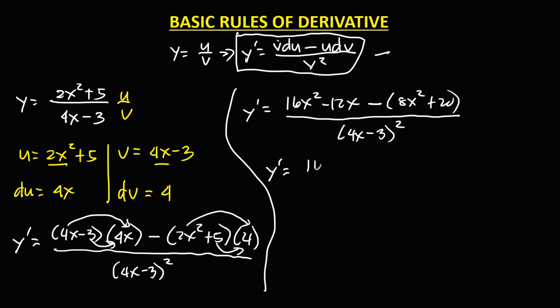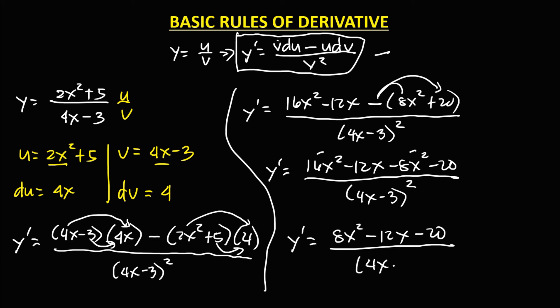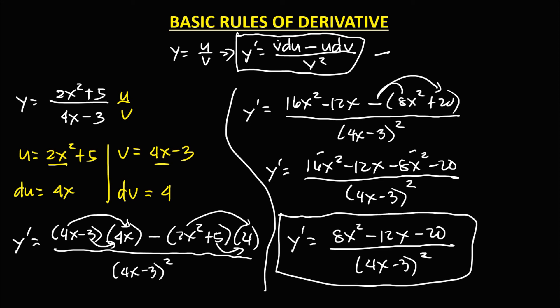Then simplifying: 16x squared minus 8x squared gives 8x squared, minus 12x, minus 20, over 4x minus 3 to the power 2. So y prime equals 8x squared minus 12x minus 20, over 4x minus 3 to the power 2. This is the derivative.